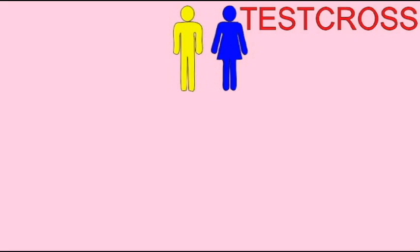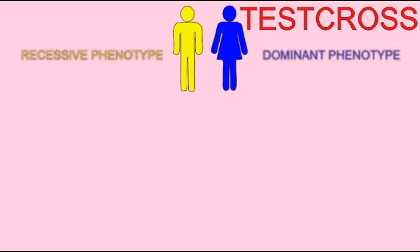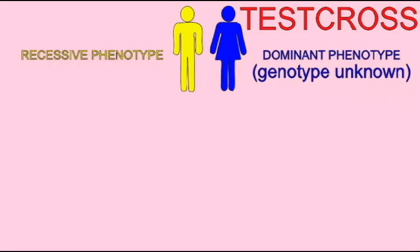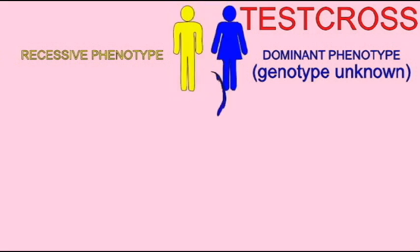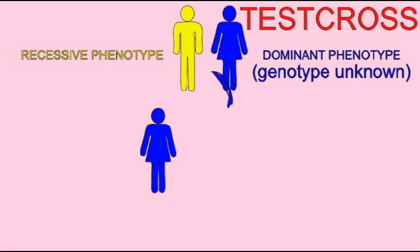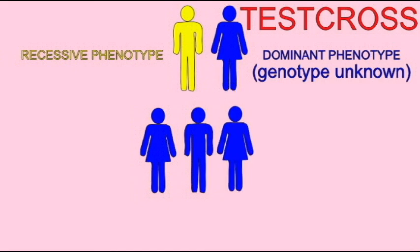When a test cross is performed, an individual whose genotype is unknown but which has the dominant phenotype is crossed with an individual which is homozygous recessive and has the recessive phenotype. This can be in flies or the analysis of a pedigree in humans.